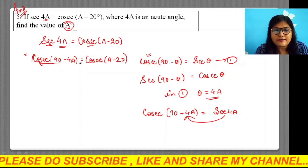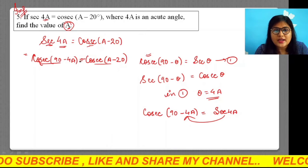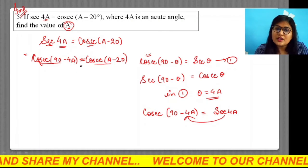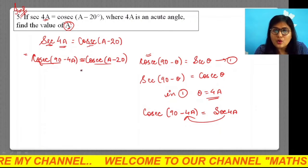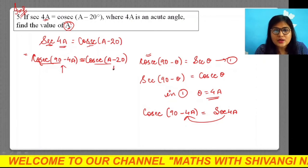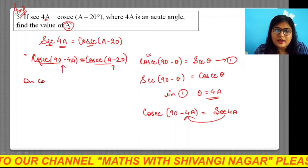Now carefully observe, on both the left hand side and right hand side we have the cosec ratio with an equality sign. This equality is true if and only if these angles are equal. So on comparing, we conclude that (90° - 4A) should equal (A - 20°).